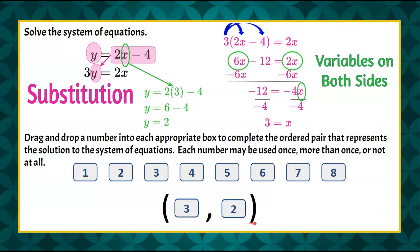And the solution of our system of linear equations is the ordered pair 3, 2. When graphed, these two lines would intersect at the point 3, 2.